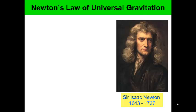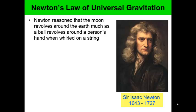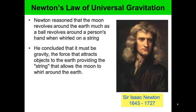What is Newton's Law of Universal Gravitation? Isaac Newton reasoned that the moon revolves around the Earth much as a ball revolves around a person's hand when whirled on a string. He concluded that it must be gravity — the force that attracts objects to the Earth — providing the string that allows the moon to orbit the Earth.